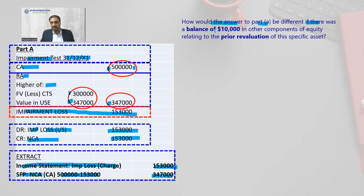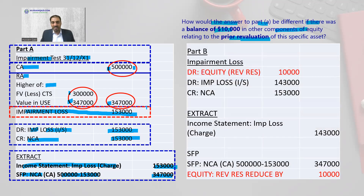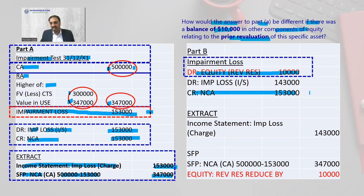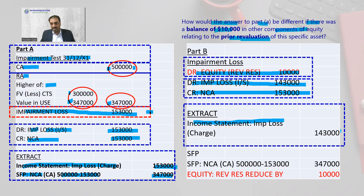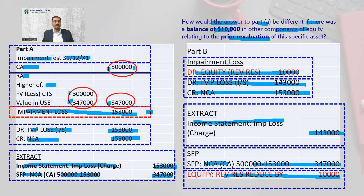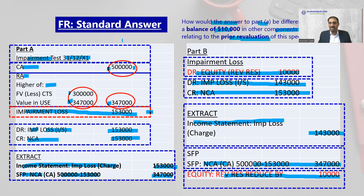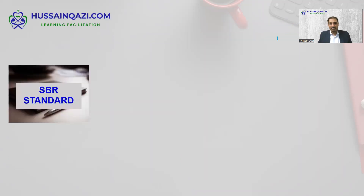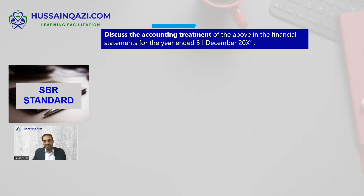How would the answer to part A differ if there was a balance of 10,000 in OCE due to prior revaluation? The impairment loss is still 153,000 — no change — but it is first charged to the revaluation reserve. Non-current asset is credited 153,000, and the balance amount goes to the impairment loss. Extract of income statement: impairment loss 143,000. Statement of financial position: non-current asset 347,000, revaluation reserve reduced by 10,000. This is the F7 standard answer.